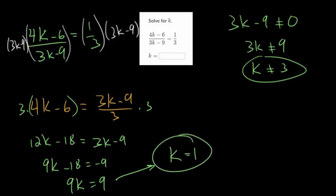So at this point, you'll want to go back to your original equation, plug in k equals 1. You get 4 minus 6, which is negative 2. You get 3 minus 9, which is negative 6, but negative 2 over negative 6 does simplify to 1 third, which means that 1 is for sure the answer.